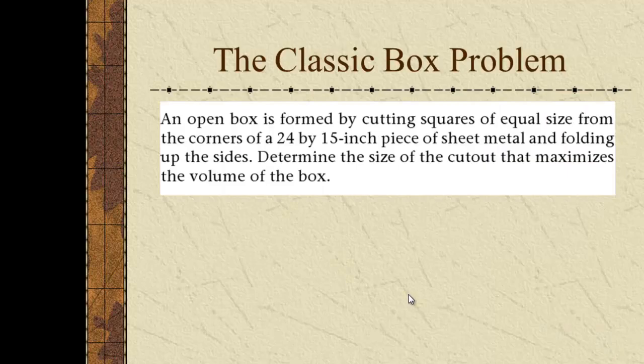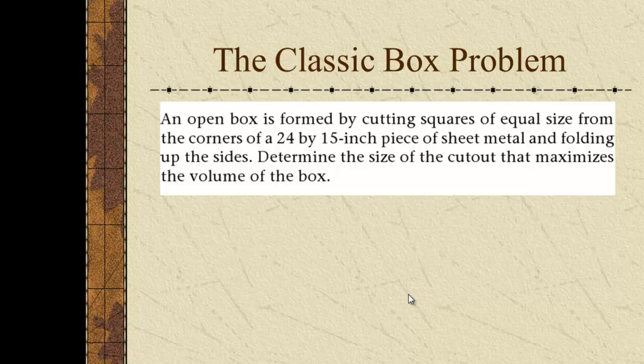Our last problem is the classic box problem. Here it is. An open box is formed by cutting squares of equal sides from the corners of a 24 by 15 inch piece of sheet metal and folding up the sides. Determine the size of the cutout that maximizes the volume of the box.